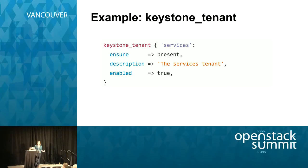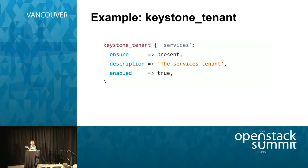Similar to the MySQL database resource, we might want to manage a Keystone tenant or Keystone project using the Puppet DSL. The type is again the way we specify all the properties. The question is: how do we do the back-end implementation? And that's what this talk is about.